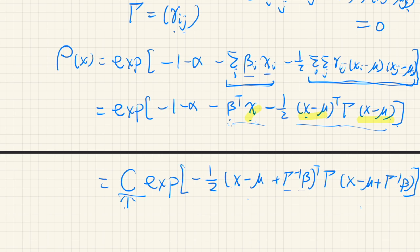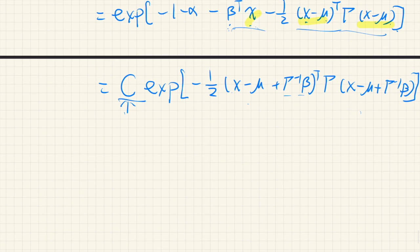So first let's determine this constant c. Basically, this is determined from the normalization constraint. So if we integrate this over the entire space, this becomes 1.